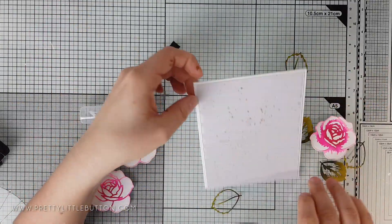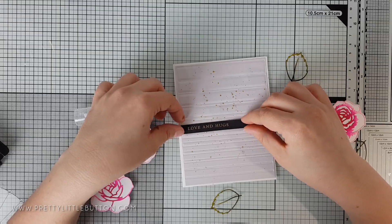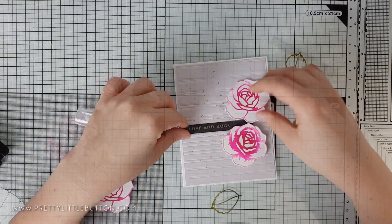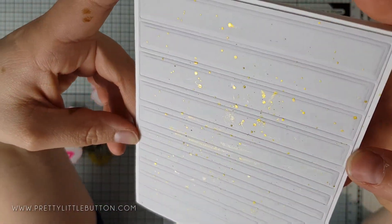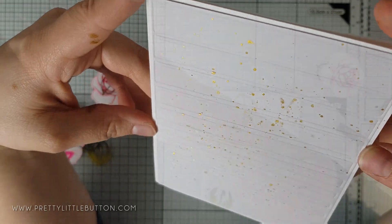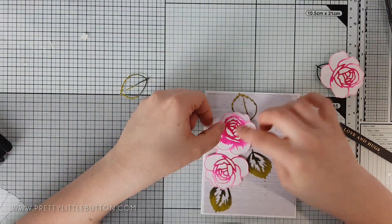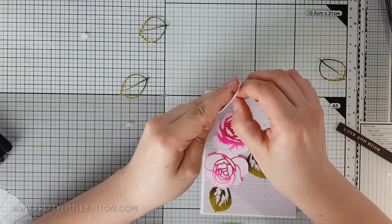So my original layout of the floral composition didn't really cover up the mistake that I made with the paint splatter, so I just rotated my layout. Instead of having it positioned in the bottom right corner, I moved it to the top left corner.